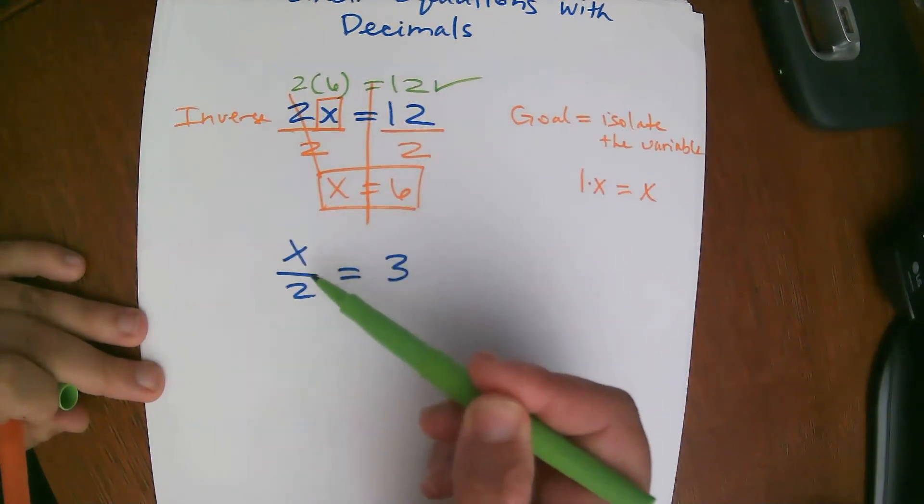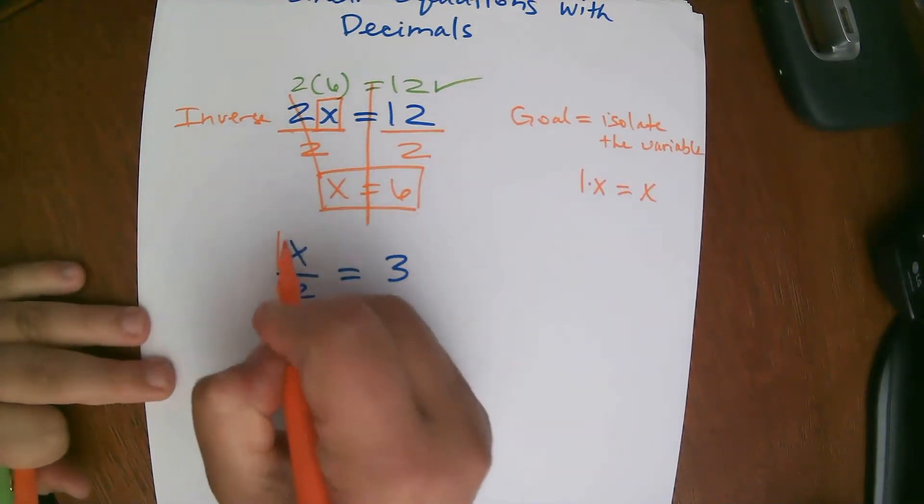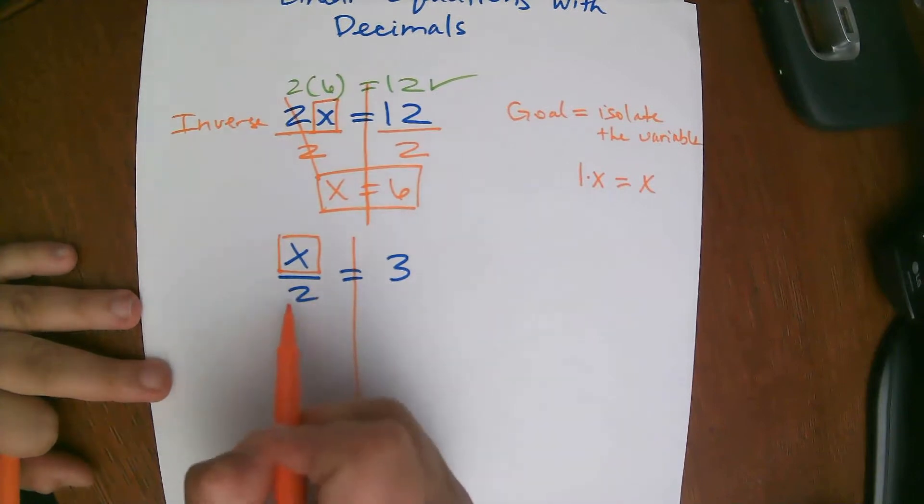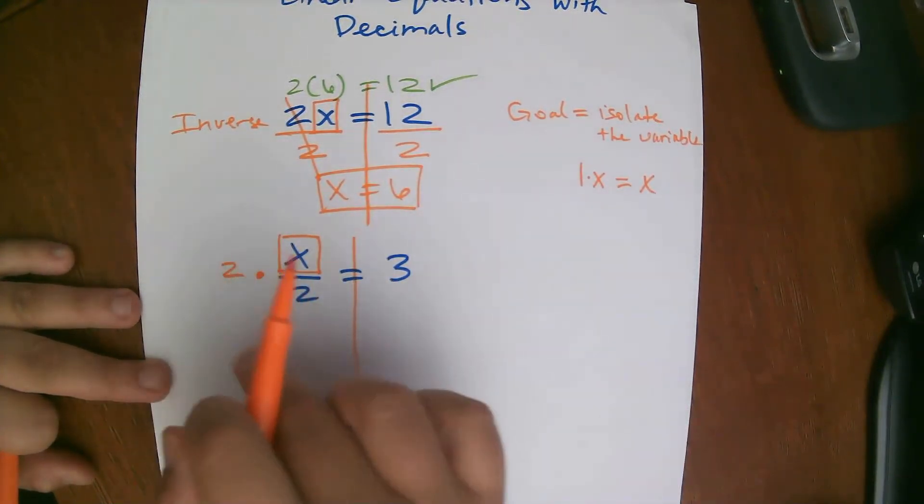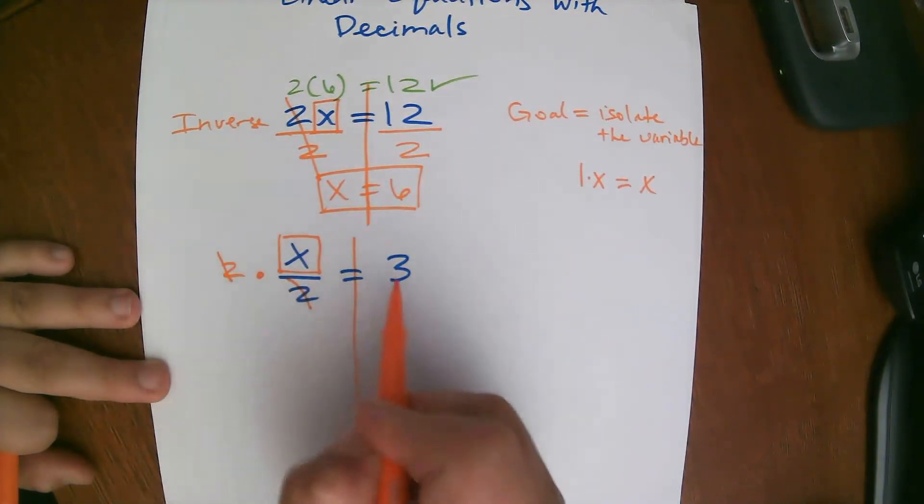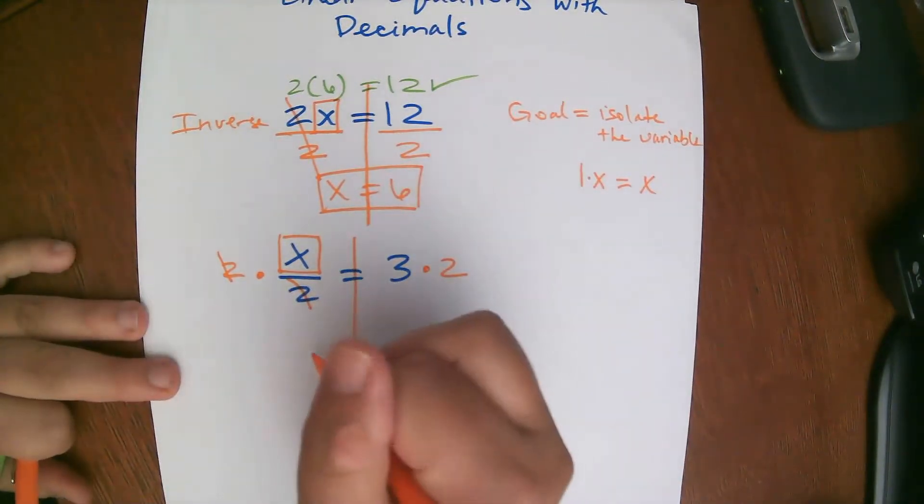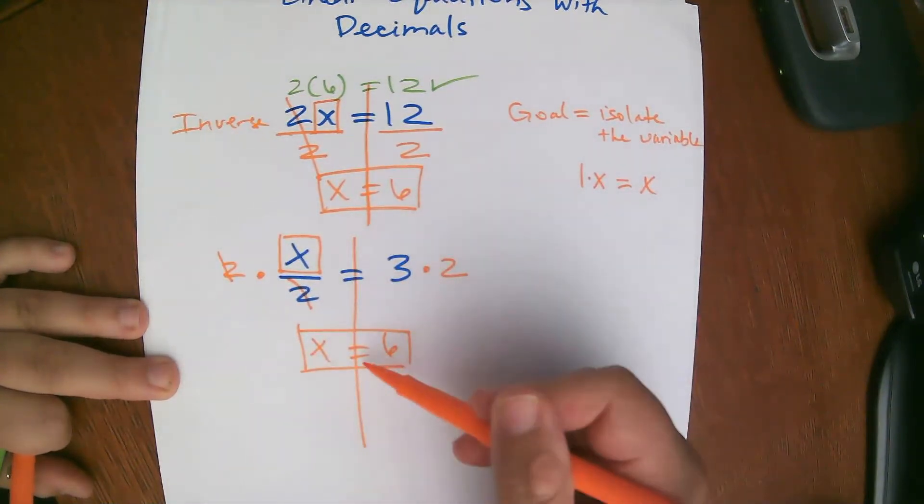So let's look at this example here. This one says x divided by 2 equals 3. So my first step, box the variable and draw the wall. I'm going to take the inverse operation of x divided by 2. What's the inverse of division? Well, it's multiply. And these end up cross-cancelling out. And whatever I do to one side of the wall, I do to the other side. So I'm going to multiply here. So I'm left with x equals 3 times 2 is 6.